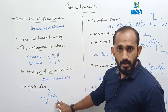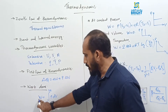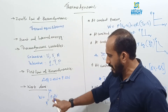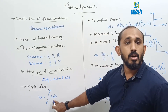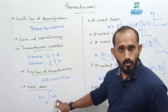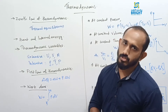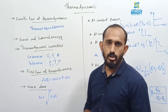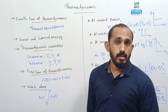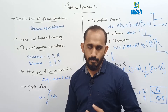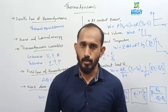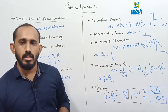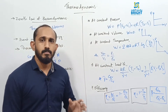If volume is variable, the work done is W = integral from V1 to V2 of P dV. This P dV gives the work done in a thermodynamic process. Based on which variable is kept constant, we have different types of thermodynamic processes.